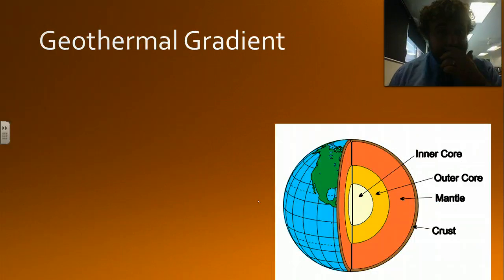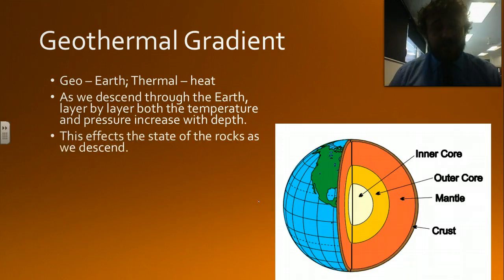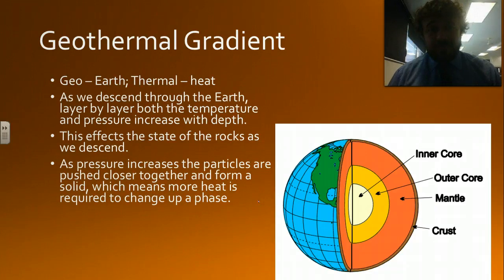The geothermal gradient. We've talked about this. Geo means Earth, thermal means temperature or heat. Basically, as we descend through the Earth, as we increase depth, pressure and temperature also increase. It affects the states of rocks as we descend. As particles, the pressure increases, the particles get pushed together and they become more solid. Even though the temperature's increasing, which makes it want to melt, it's very hot in the inner core and that's why it's all melty, molten.